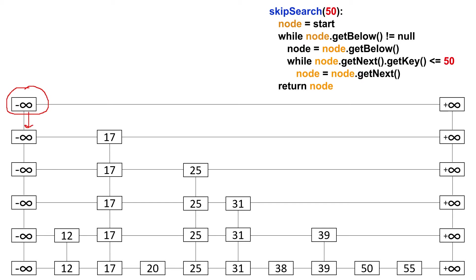It's not null because it holds negative infinity. So now that we're down a level, once you go down a level you always try to scan forward as much as you can, then go down again, then scan forward until you can't anymore, and we keep repeating this process. We'll go forward and ask: is 17 less than 50? It is, so we can go forward. We stop going forward if the next reference on that level is higher than the key we're searching for. The next reference is positive infinity, which is higher than 50, so we can't go forward anymore.